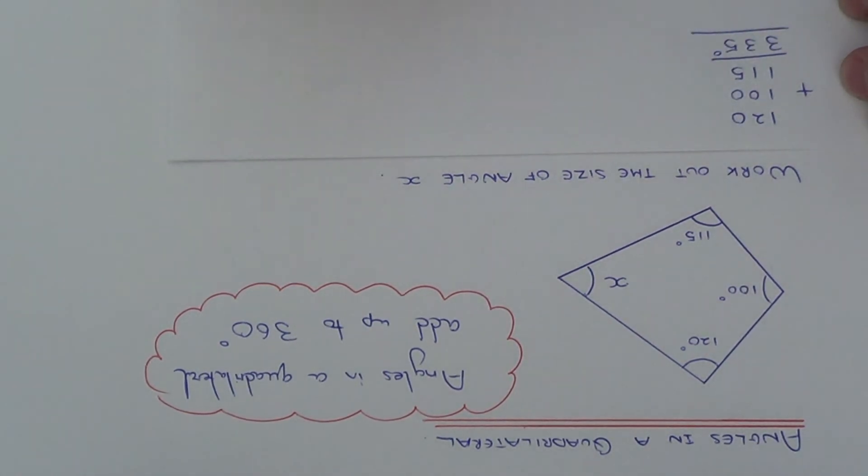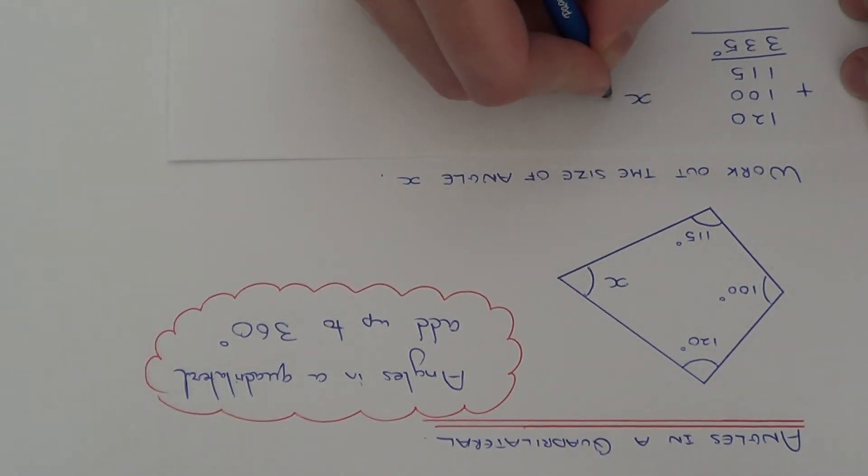The three angles which we've already got add up to 335 degrees. So if we subtract this from 360, this will give us the size of angle X.